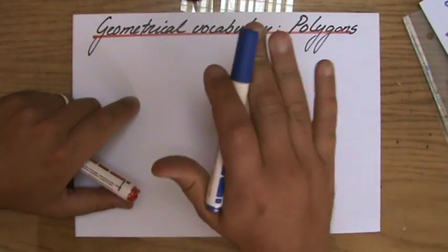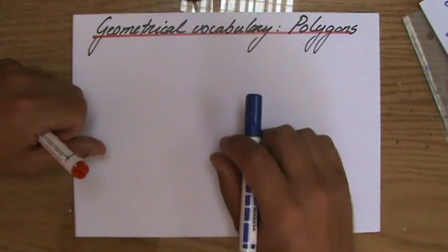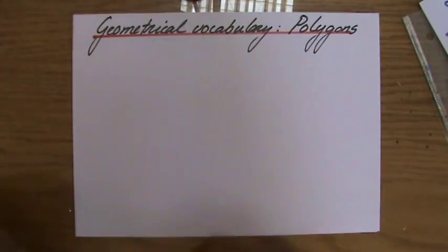Now, polygons, first of all, we're talking about two-dimensional, so flat figures. And what does it mean?